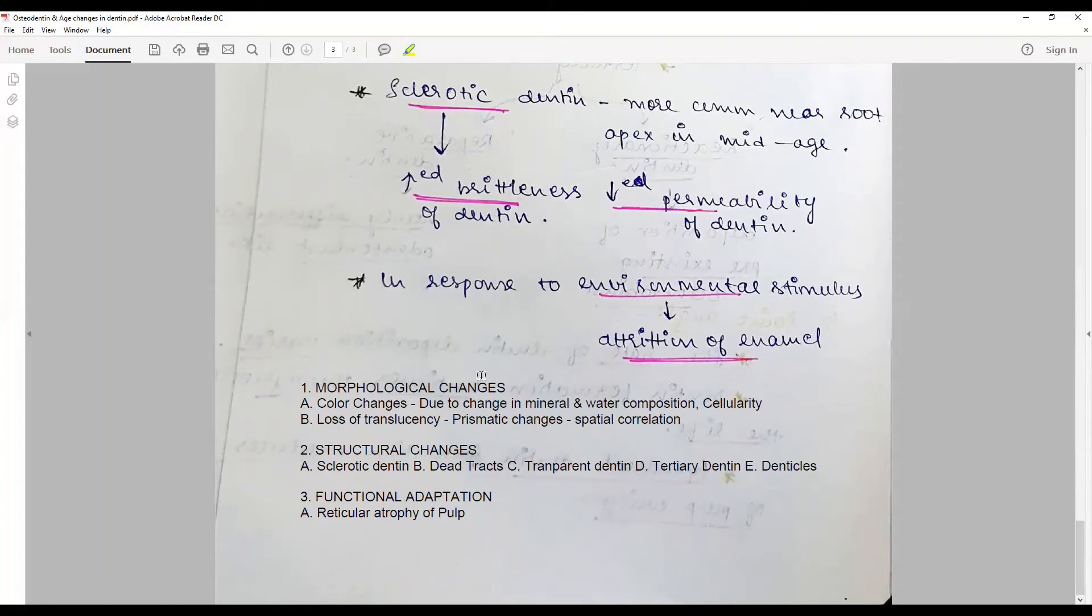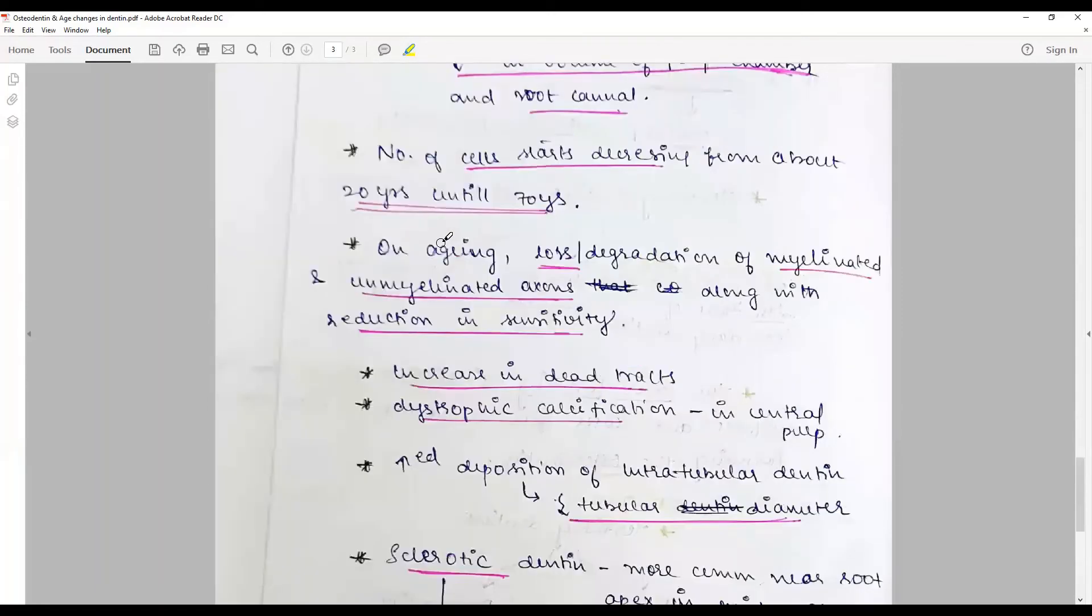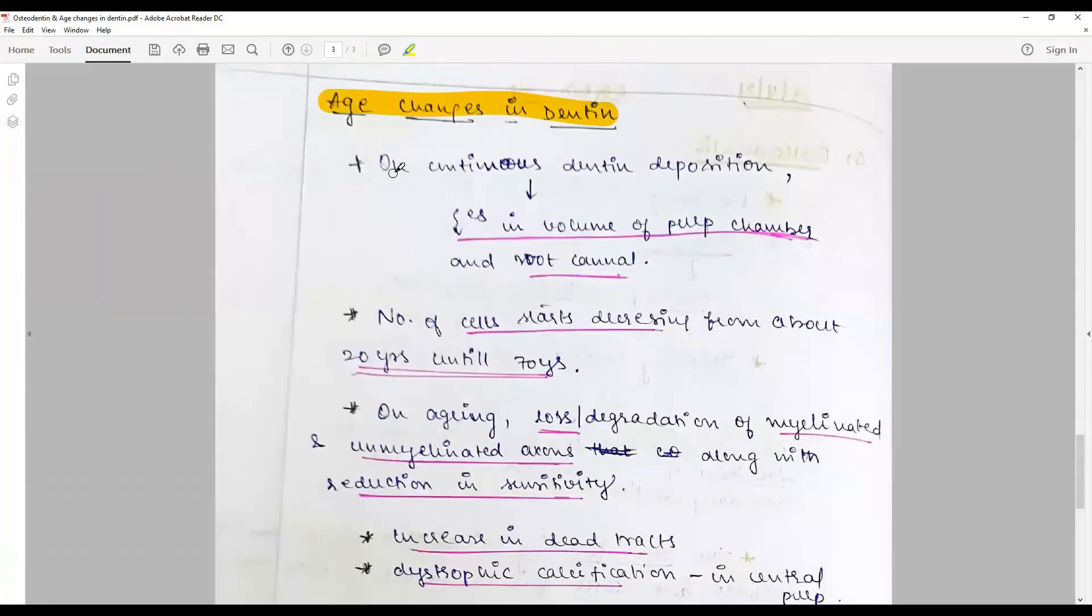To go in detail: dentine deposition is persistent for life, so it continues till the end of life. Deposition of secondary dentine causes reduction in the volume of pulp chambers and root canals.